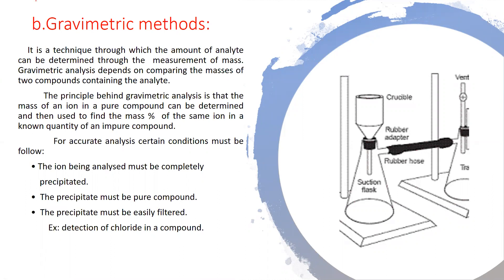Gravimetric analysis depends on comparing the masses of two compounds containing the analyte. The principle behind gravimetric analysis is that the mass of an ion in a pure compound can be determined and then used to find the mass percentage of the same ion in a known quantity of an impure compound.